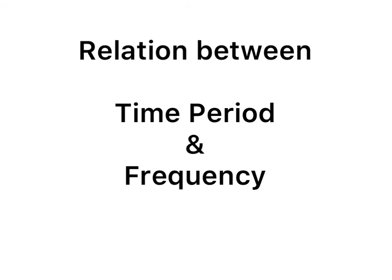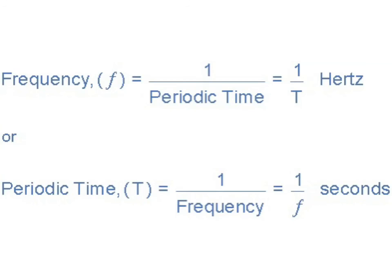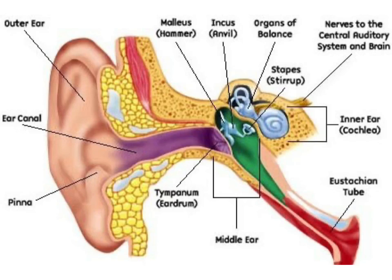Now, let's study the relation between time period and frequency. Dear students, now we know that time period is the time required to make one vibration and frequency is the number of vibrations made in one second. This means that time period is equal to the reciprocal of frequency. That is, time period is equal to one upon frequency.